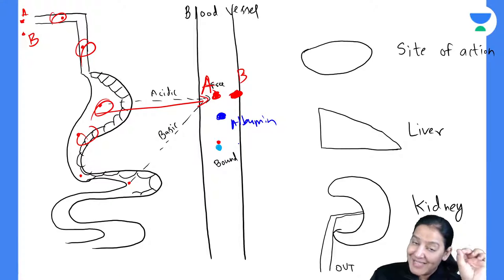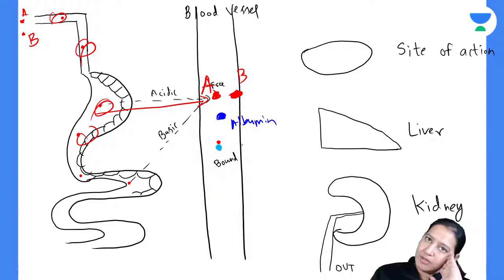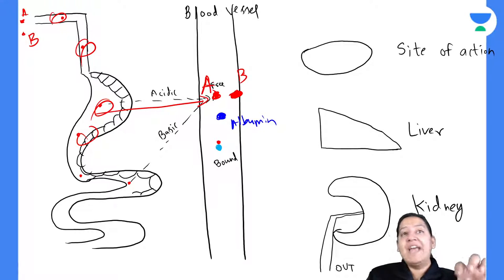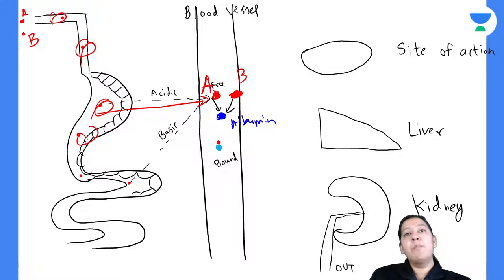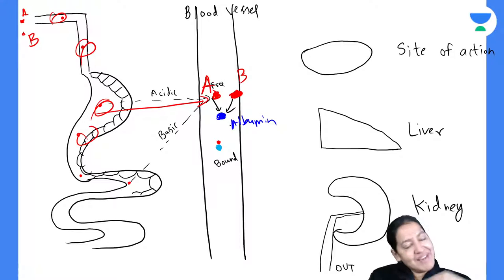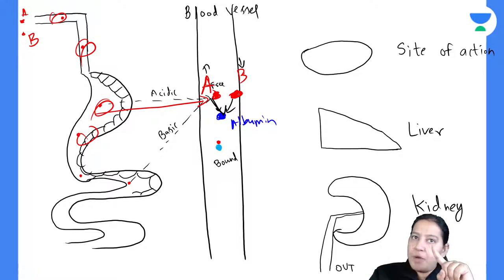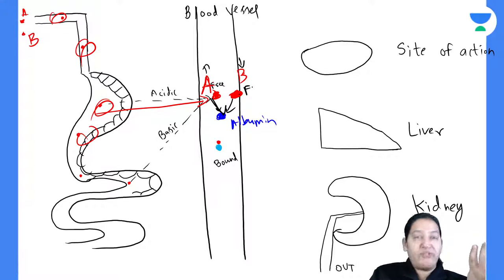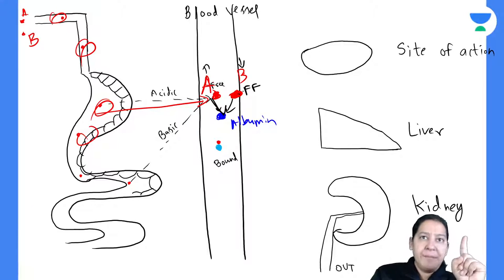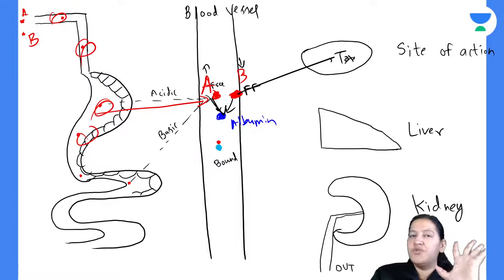Both acidic drugs will fight for albumin. The drug with more affinity will bind with albumin. The drug with less affinity will bind less. If A has more affinity compared to B, A will bind with albumin but B will not bind and B will remain free. More free drug B will cause toxicity — it will enter the tissue and cause toxicity.